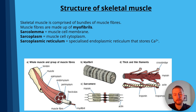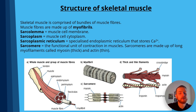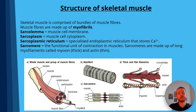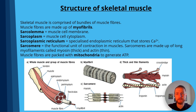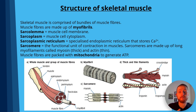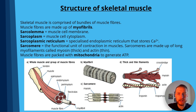The sarcoplasmic reticulum is specialised endoplasmic reticulum within muscles that stores calcium ions. The sarcomere is the functional unit of contraction in muscles, made up of long myofilaments called myosin — the thick filament — and thinner ones called actin. Muscle fibres are packed with mitochondria, especially slow twitch, allowing them to generate ATP.